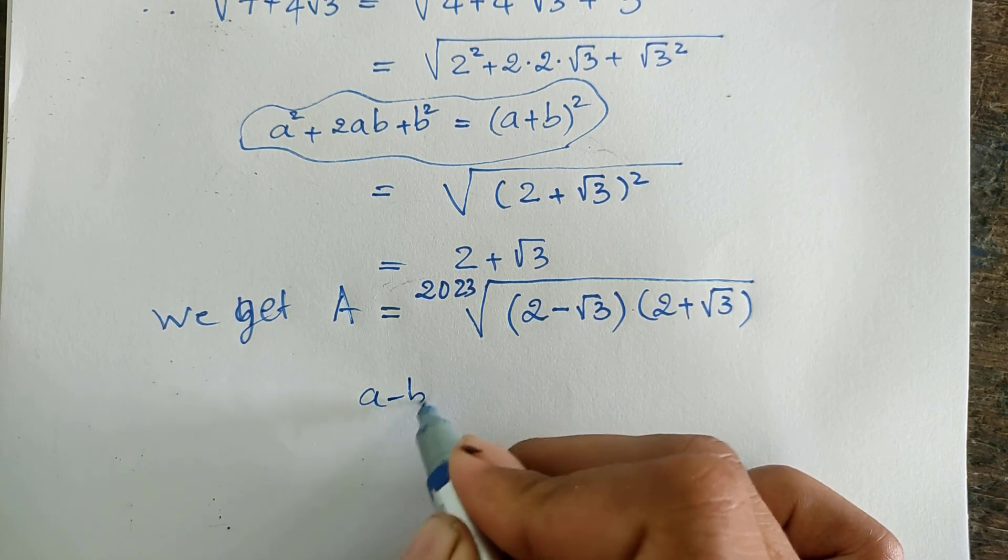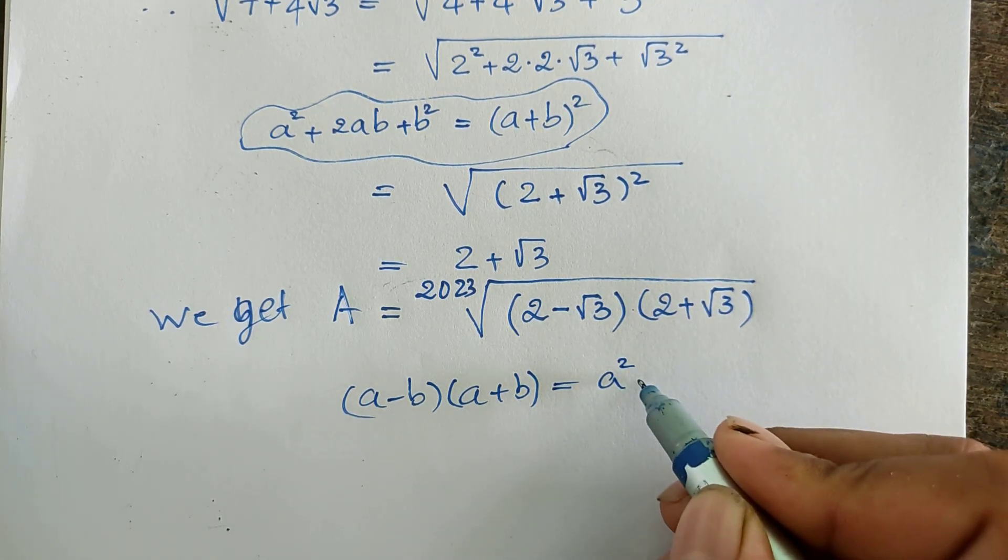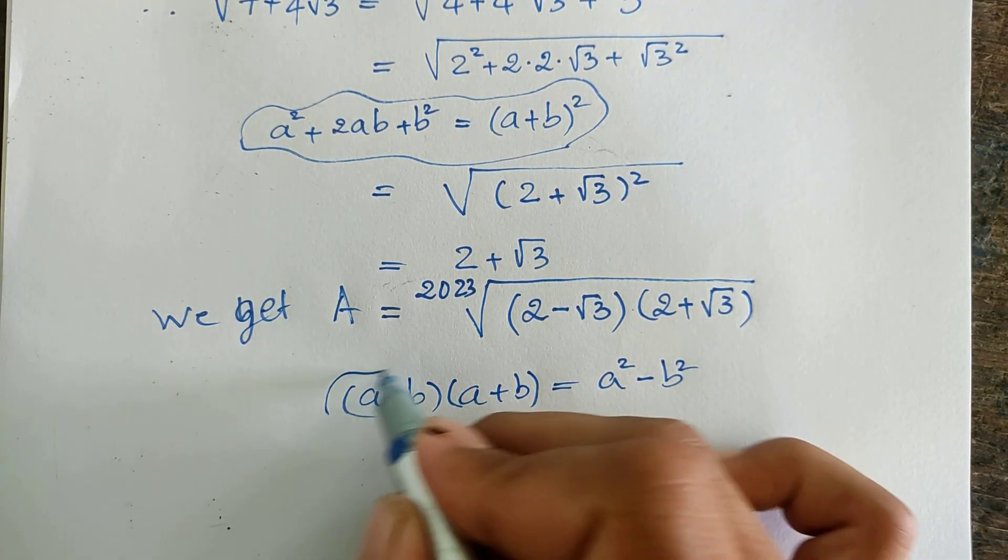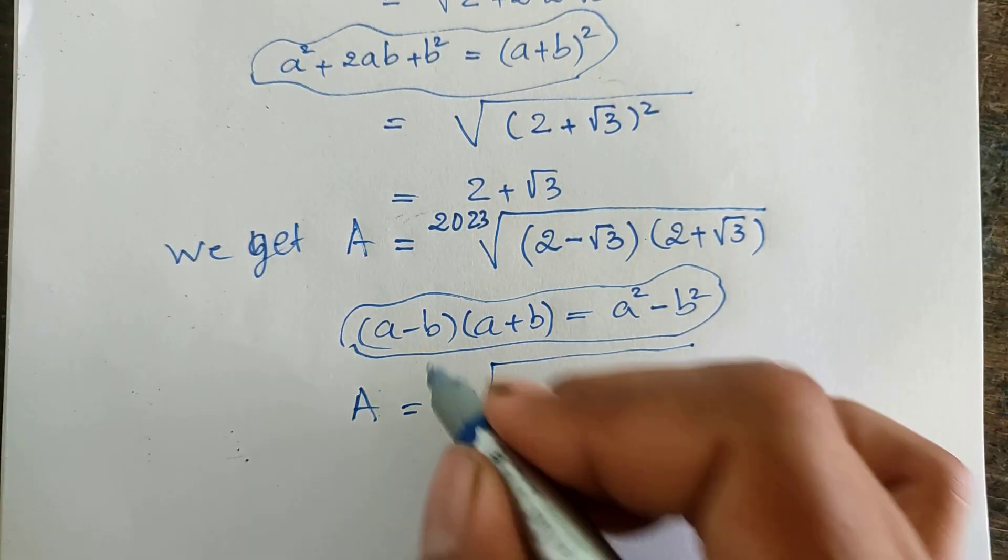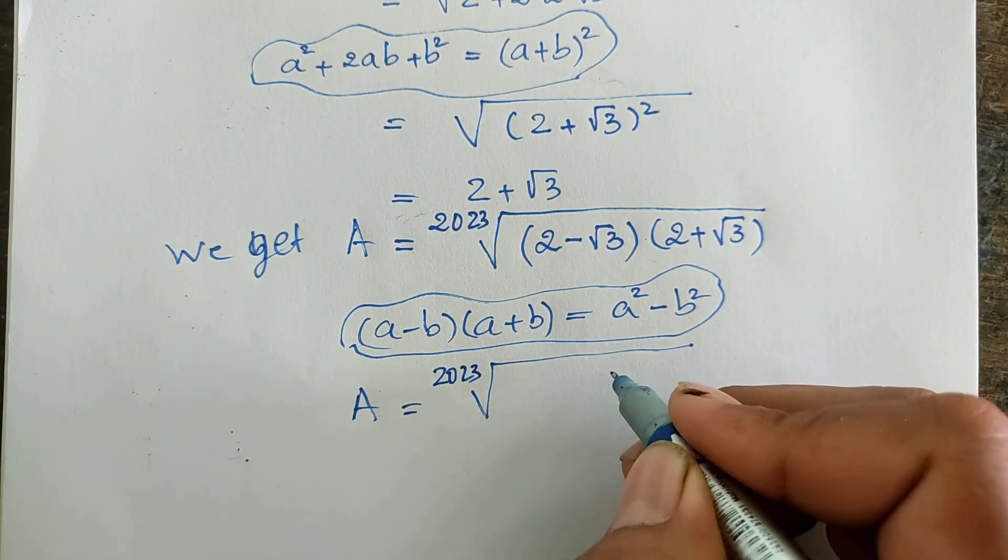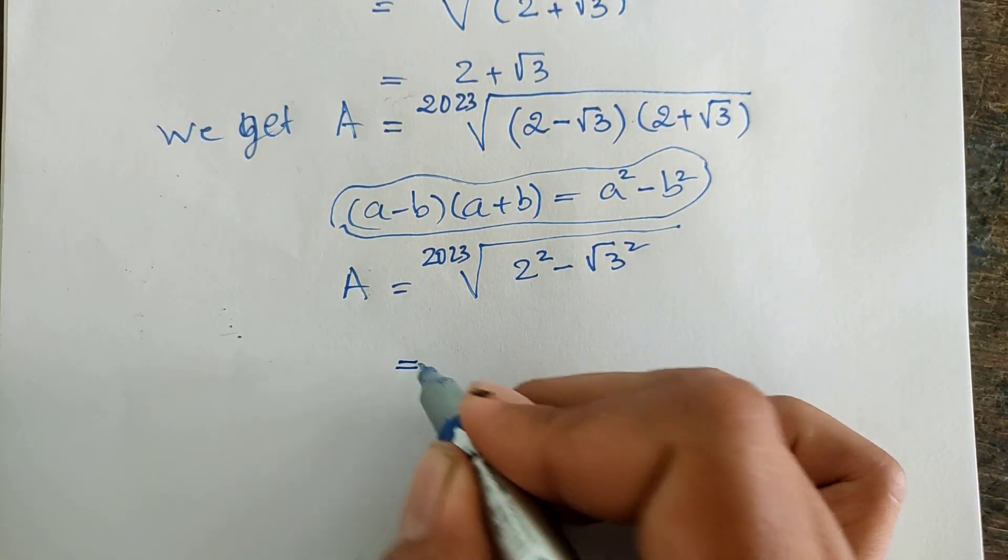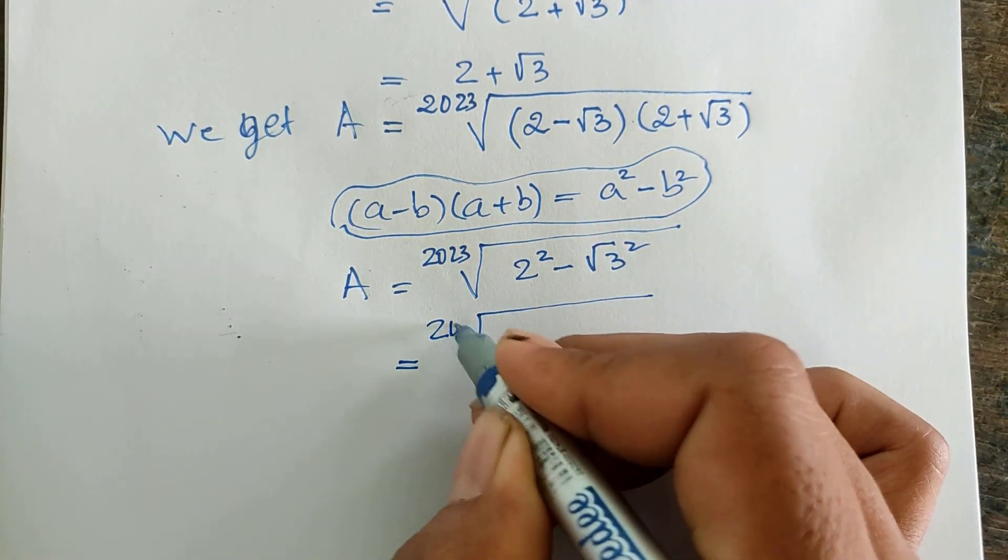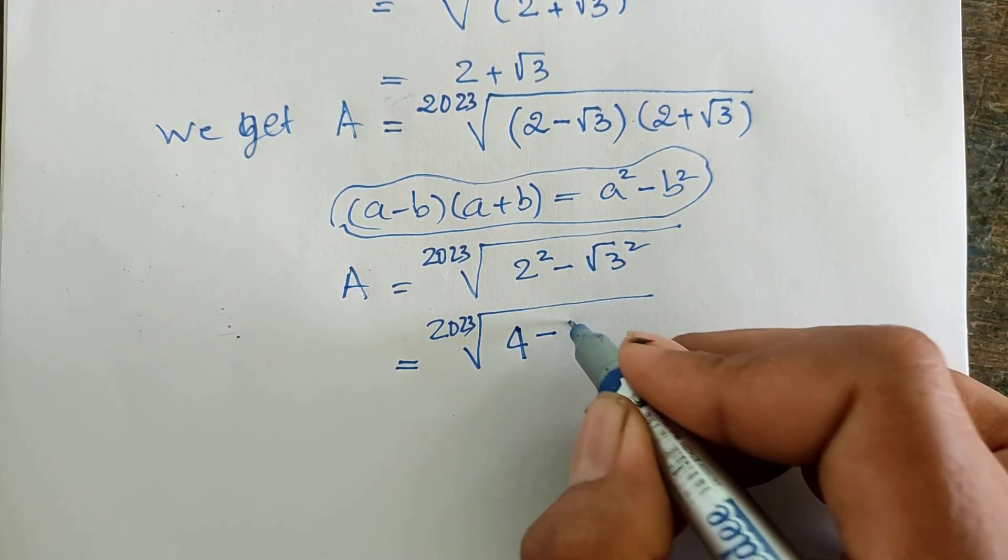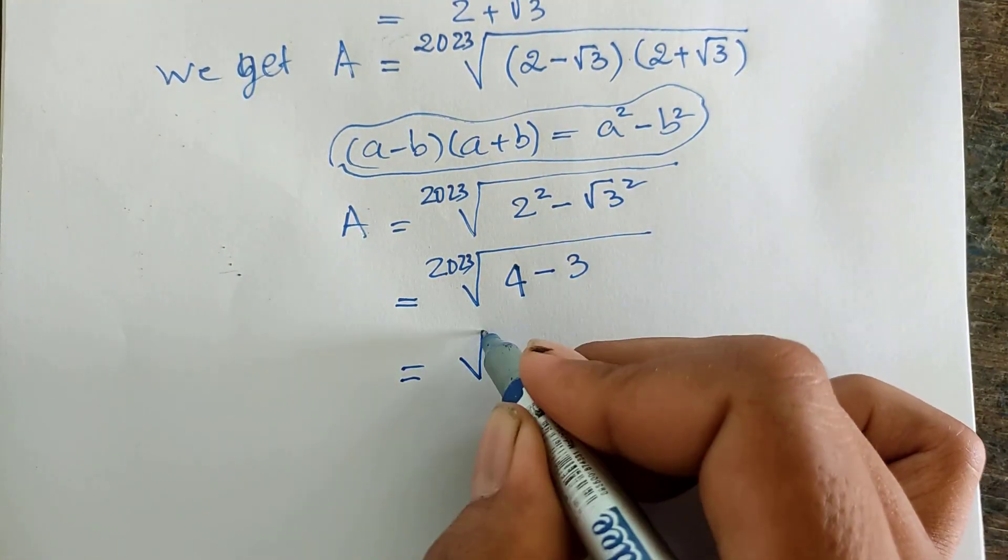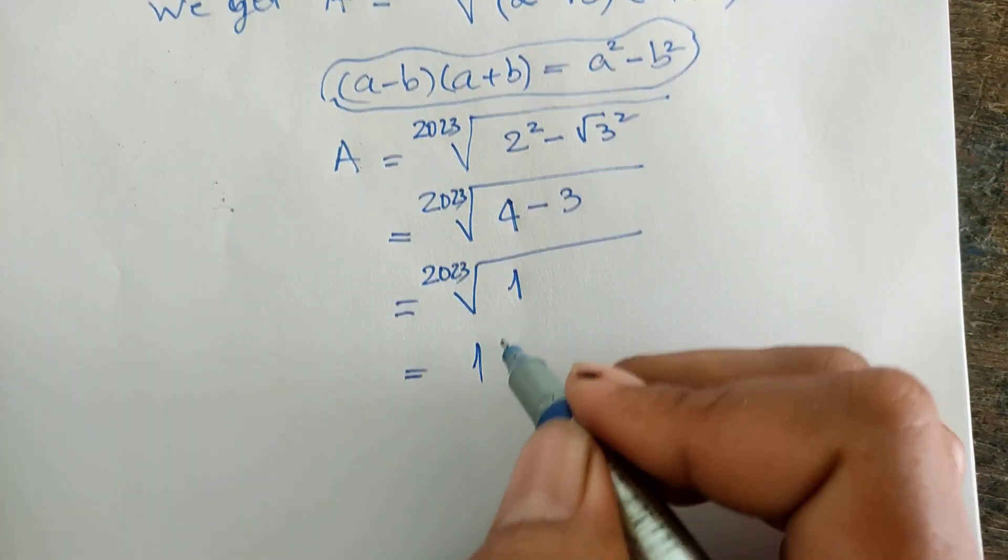So now we get A equals 2023 root of 2 squared minus square root of 3 squared. This equals 2023 of 4 minus 3, which equals 2023 root of 1, and equals 1. Thus A equals 1.